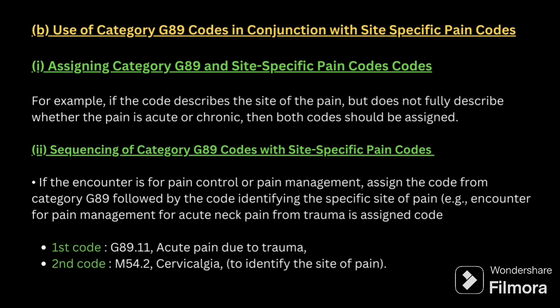When assigning category G89 alongside a site-specific pain code: if the site-specific code describes the site of pain but does not fully describe whether the pain is acute or chronic, then both codes should be assigned — both acute and chronic specificity should be captured.